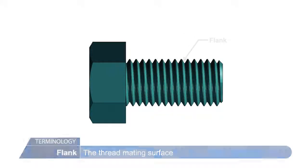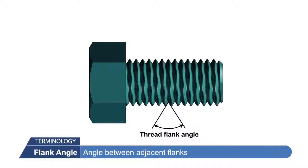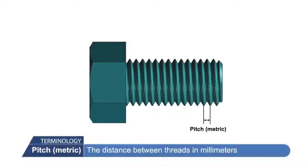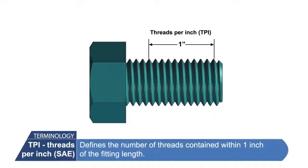Flank angle: the angle between adjacent flanks. Pitch: the distance between the threads in millimeters. Threads per inch, or TPI, defines the number of threads contained within one inch of the fastener.